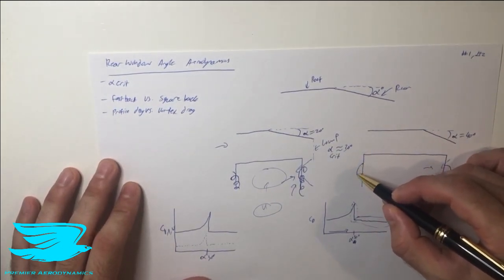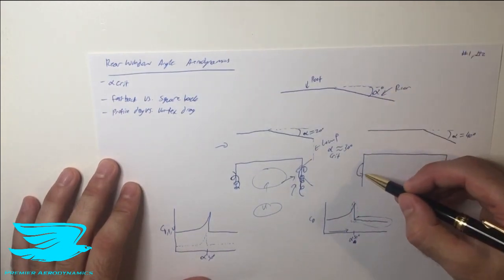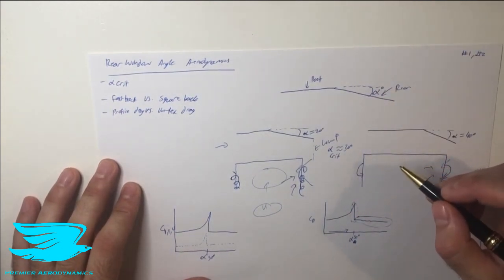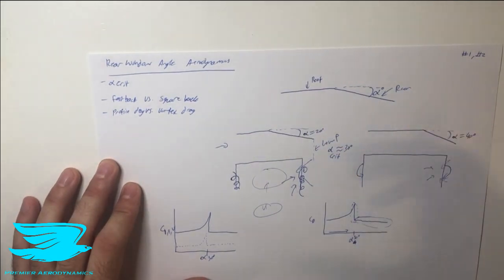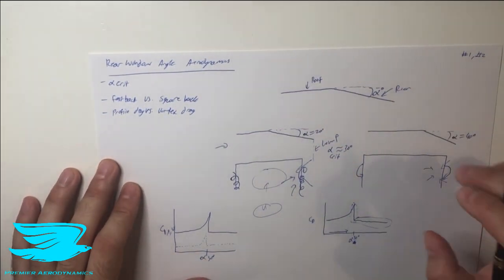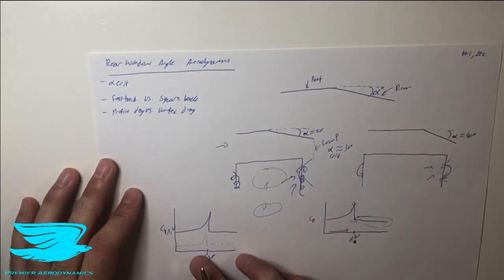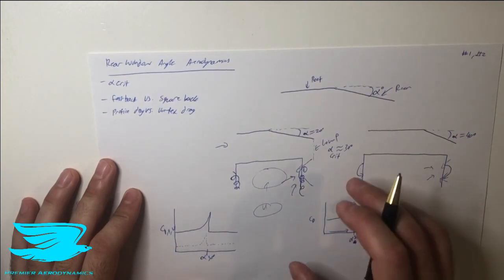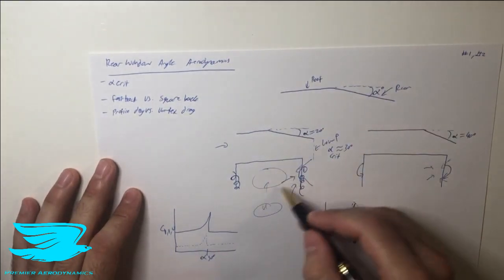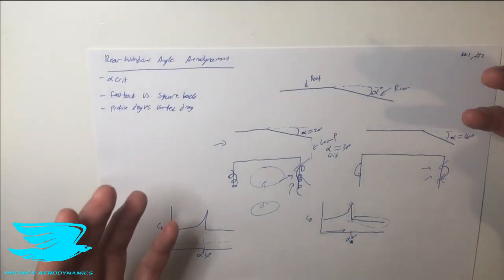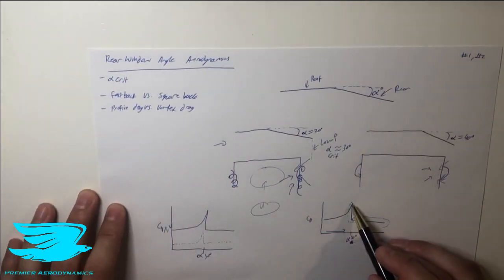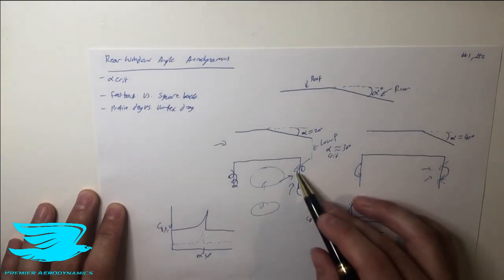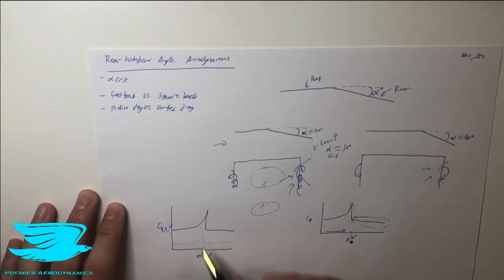The exact critical angle may be 25, 30, or 35 degrees depending on the car, but around 30 degrees is typical. Past that point, weaker opposite-sign vortices form and help keep the flow attached to some extent, though drag is still present due to any remaining flow separation. In terms of drag, the vortices create not only vortex drag but also increase pressure drag on the rear face, so total drag increases. The profile drag component is roughly three times larger than the vortex drag — an important thing to remember.